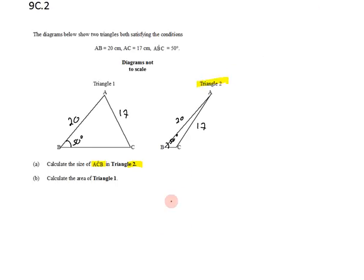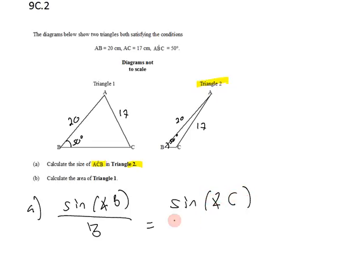So to find a missing angle, I know two sides and another angle. So sine rule seems like an appropriate choice. So we'll start with sine rule. Sine rule says that the sine of angle B over side B is equal to the sine of angle C over side C.